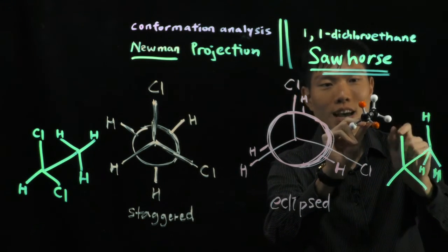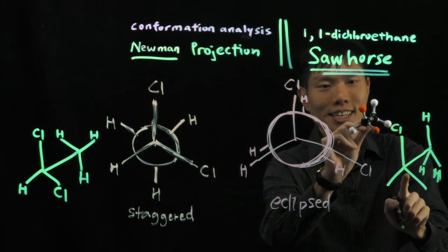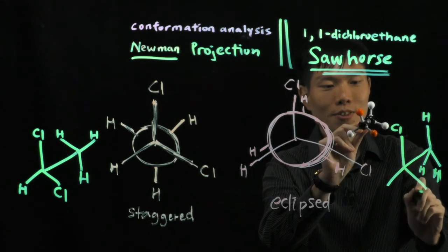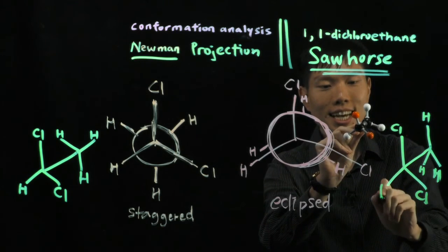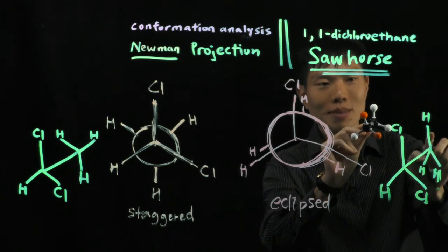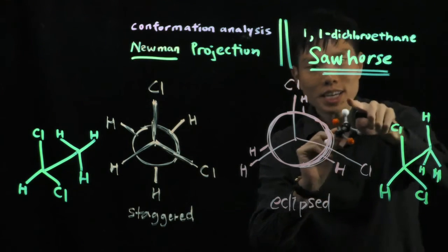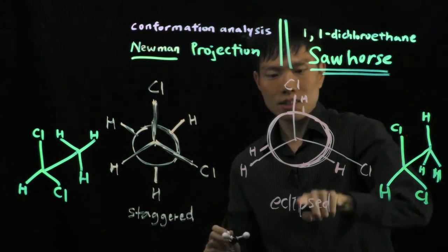For the front, you have here the chlorine. At the side here, a chlorine. And the other side, hydrogen. Let me draw a clearer diagram for this. Right here, again. So for eclipsed.